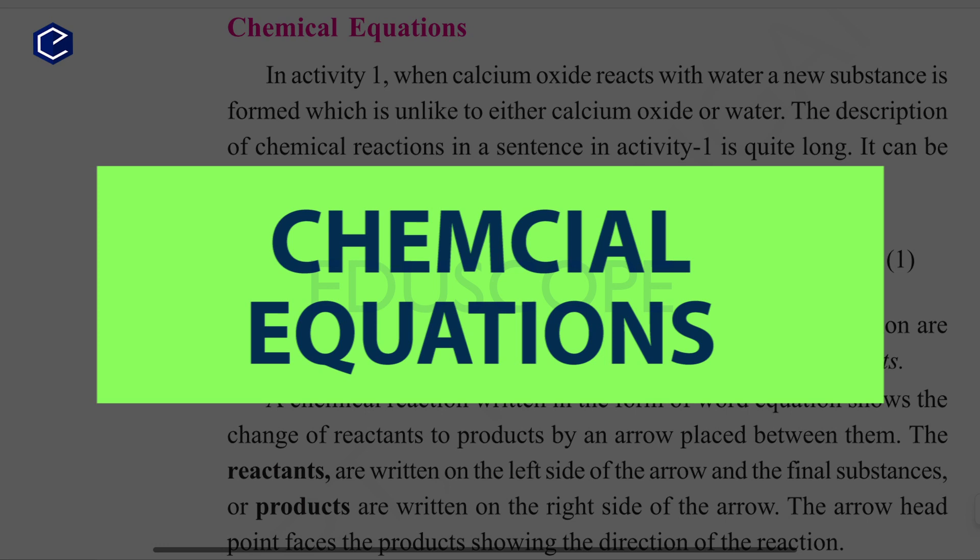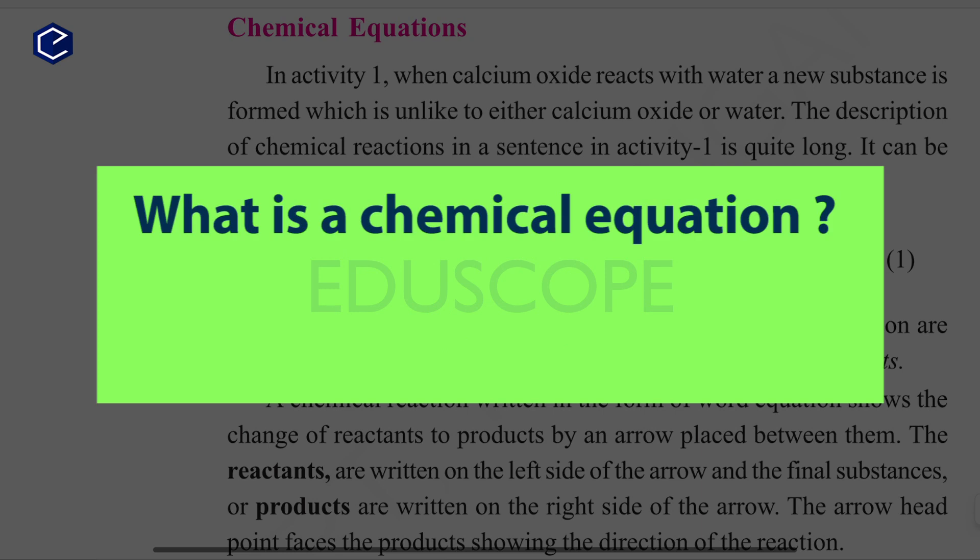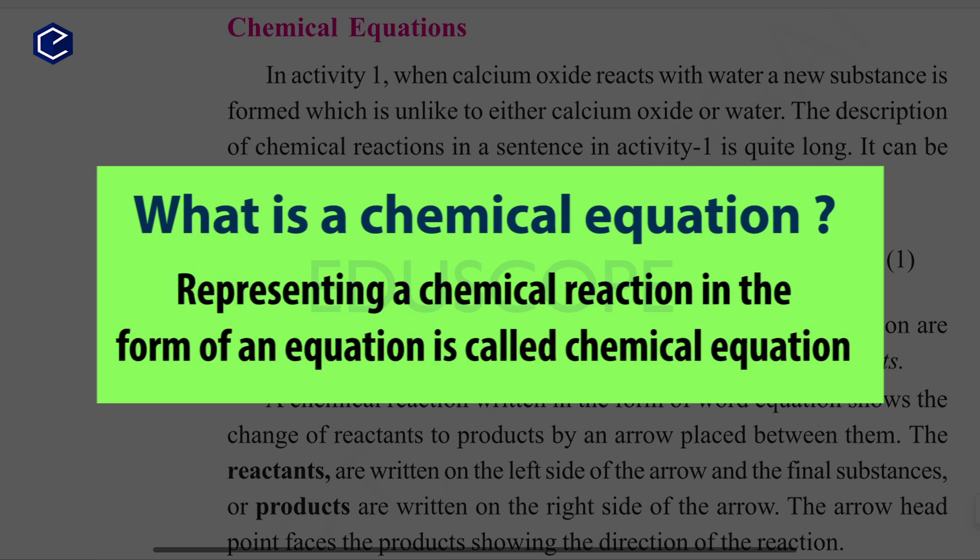In this video, let's learn about chemical equations. So what is a chemical equation? Representing a chemical reaction in the form of an equation is called a chemical equation. When we write a chemical reaction in equation form, we call it a chemical equation.